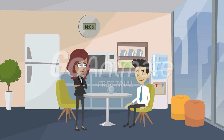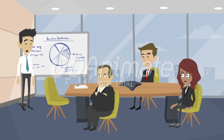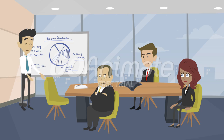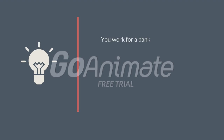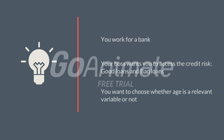Pete works for a bank and the CEO has asked him to evaluate the credit risk of the company. But he has a lot of variables, so what should he do? As an example, you could think of whether it is relevant to include age in the model or not, because younger people might have a different behavior than older people.